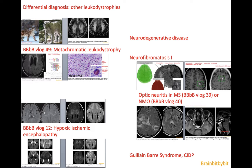In the differential diagnosis of Krabbe's are the other leukodystrophies, especially metachromatic leukodystrophy. Krabbe's can have a tigroid pattern like metachromatic leukodystrophy because of sparing of the very vascular white matter. In an infant of a few months you might also consider hypoxic-ischemic encephalopathy. In elderly patients, consider neurodegenerative diseases. When there is thickening of the optic nerve, neurofibromatosis and optic neuritis can be differential diagnosis options. If it involves the cauda equina, you can think of Guillain-Barré syndrome.